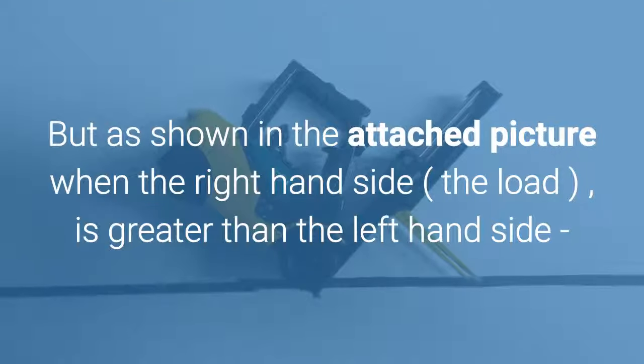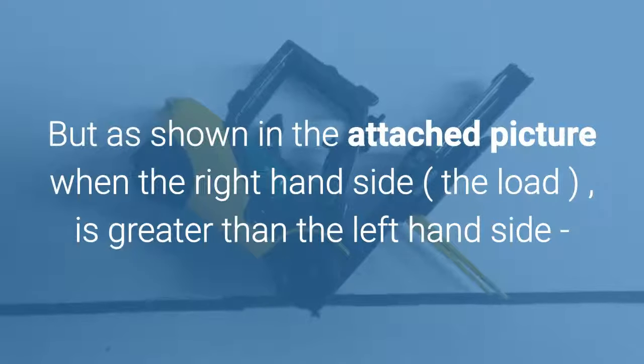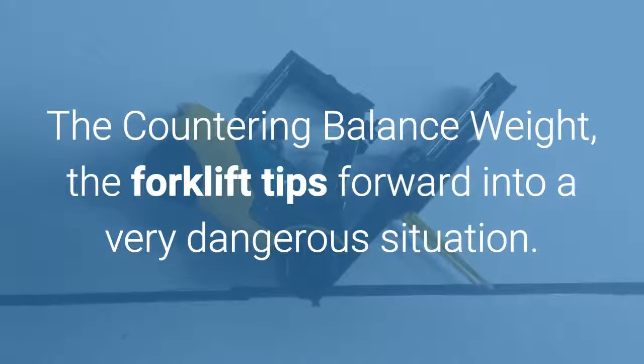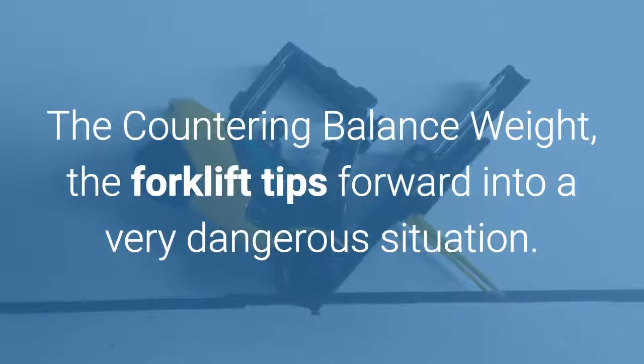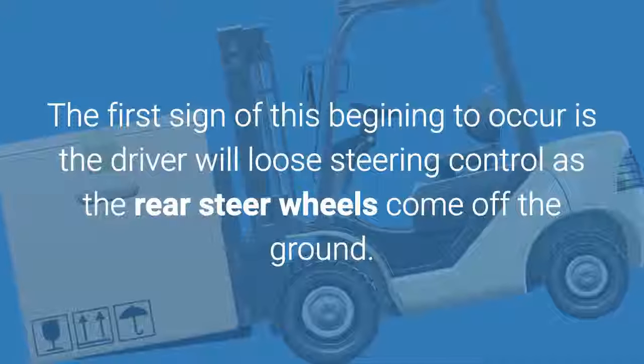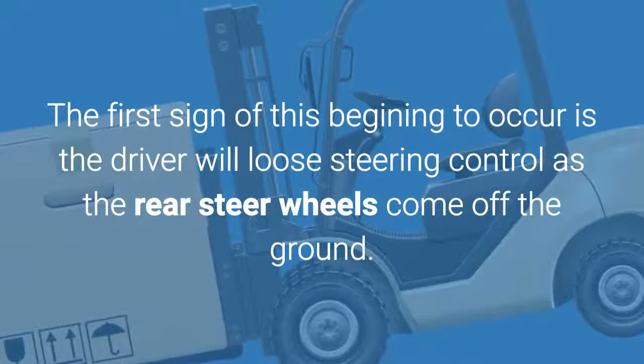But as shown in the attached picture, when the right hand side, the load, is greater than the left hand side, the countering balance weight, the forklift tips forward into a very dangerous situation. The first sign of this beginning to occur is the driver will lose steering control as the rear steer wheels come off the ground.